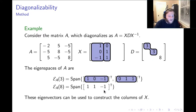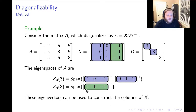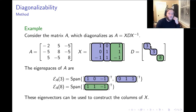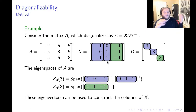Then we go to lambda equals 8. We have one eigenvector: 1, 1, negative 1. That becomes the third column of X, corresponding to the third diagonal entry of D. This gives us our complete factorization: A equals X times D times X inverse, where X is this particular 3 by 3 matrix whose columns are linearly independent eigenvectors of A.